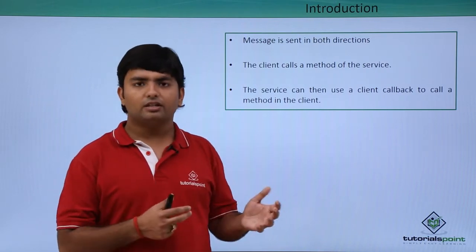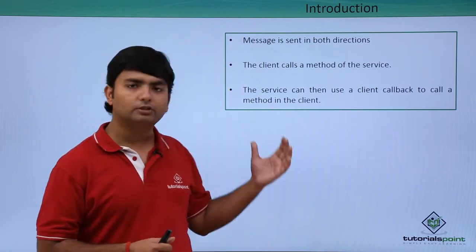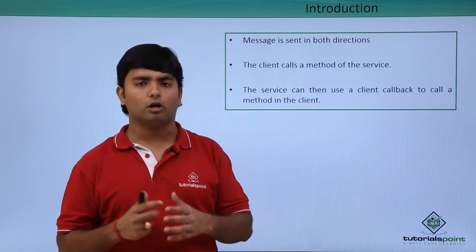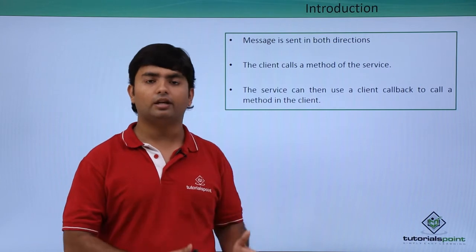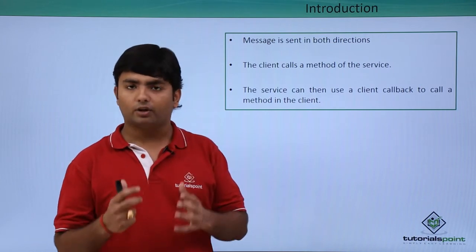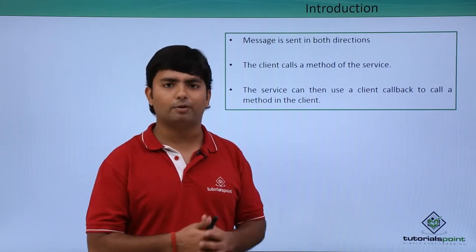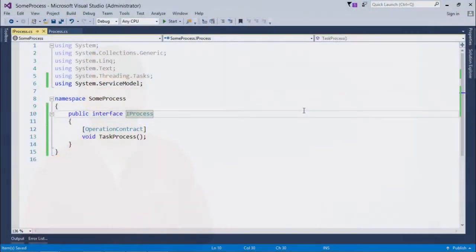Let's start implementing the duplex message exchange pattern and see how to pass the callback function in the request-reply pattern of WCF. To implement the duplex message exchange pattern in WCF, I have taken a new project which has an interface called IProcess.